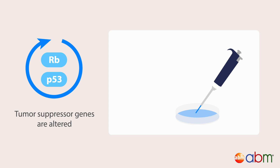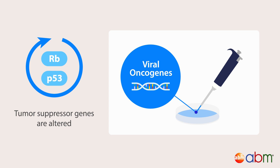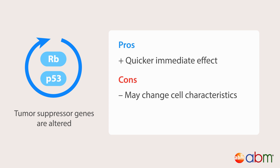When targeting the tumor suppressor genes, inactivate them by inserting viral oncogenes, therefore allowing the cell cycle to continue. This method takes effect quicker, but in some cases may change the cell's characteristics.